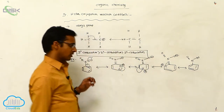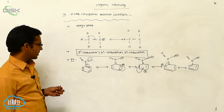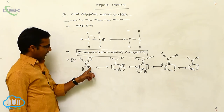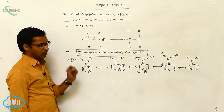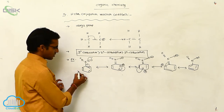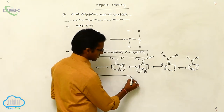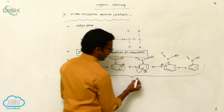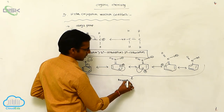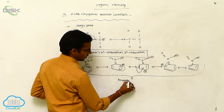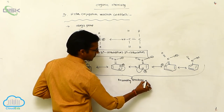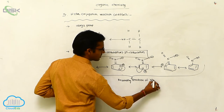These are the resonating structures of nitrobenzene. In the previous example, the carbon is getting a negative charge and a positive charge. These are the resonating structures of nitrobenzene.